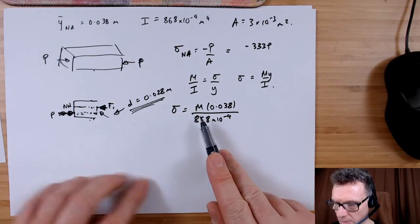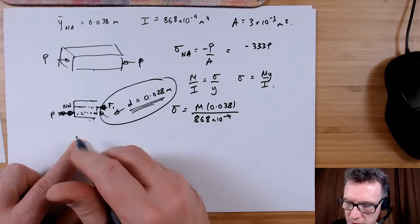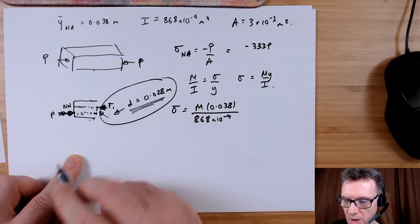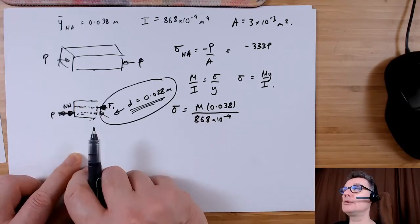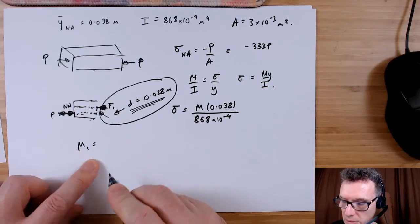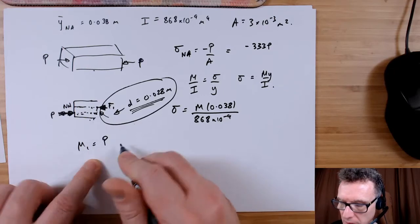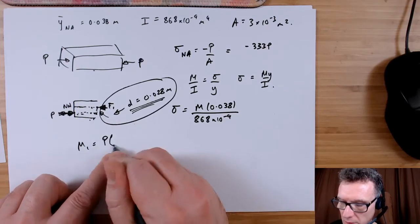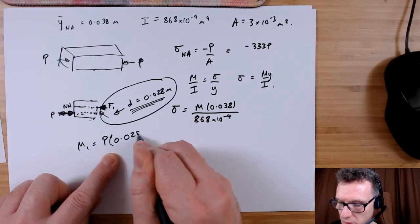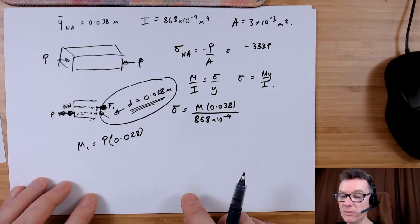Okay, the M is going to be found upon this term, so this is the internal turning moment as it were. So M1 equals the P times by 0.028. Notice here I'm just using my head as an engineer to work out what's positive and negative.